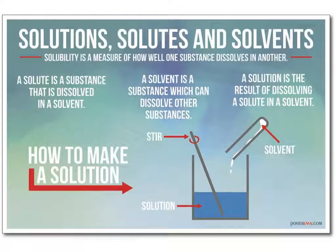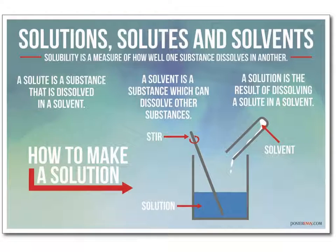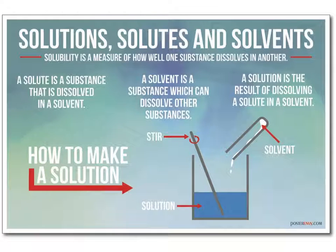A solution consists of two things: a solute and a solvent. A solution is a homogeneous mixture of a solvent and a solute. The solute is the thing being dissolved — generally the minor component. The solvent is the thing doing the dissolving — generally the major component. A solute doesn't have to be a solid; it can also be a liquid or a gas, same with the solvent. A solution has the same composition throughout.